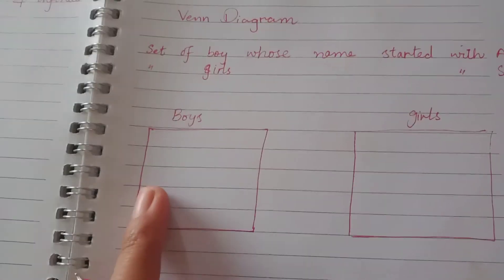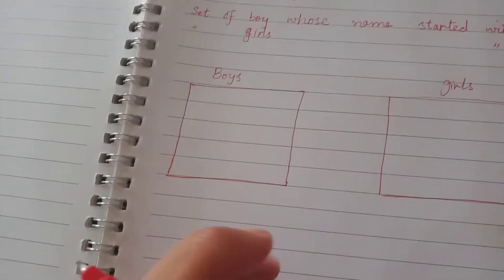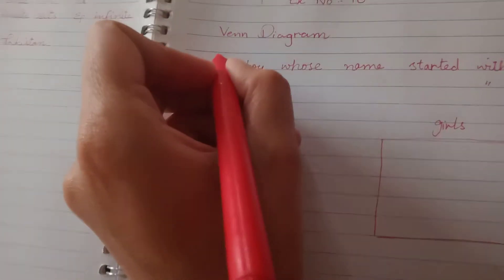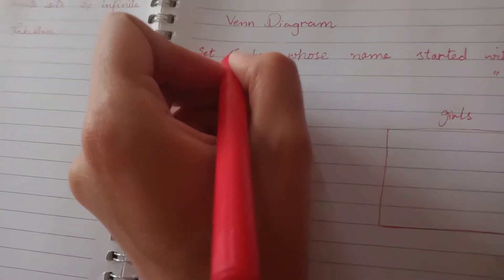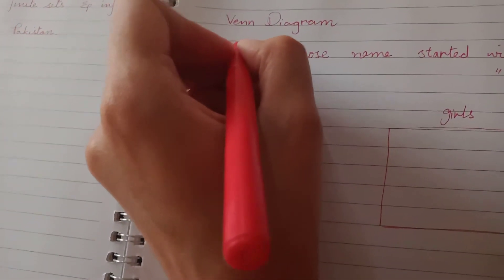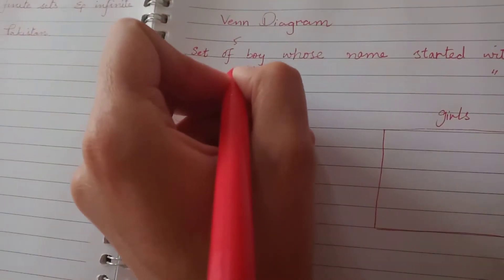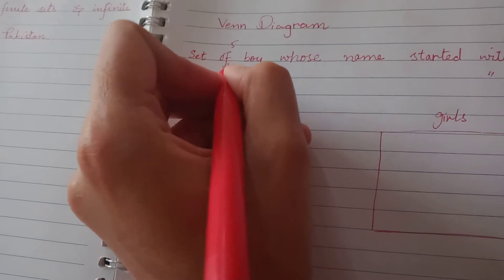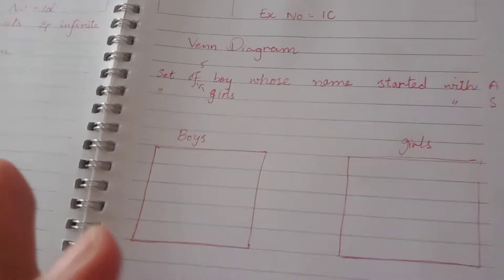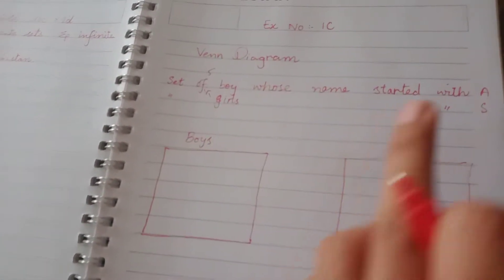This box here represents boys. We have a circle for boys and a circle for girls.